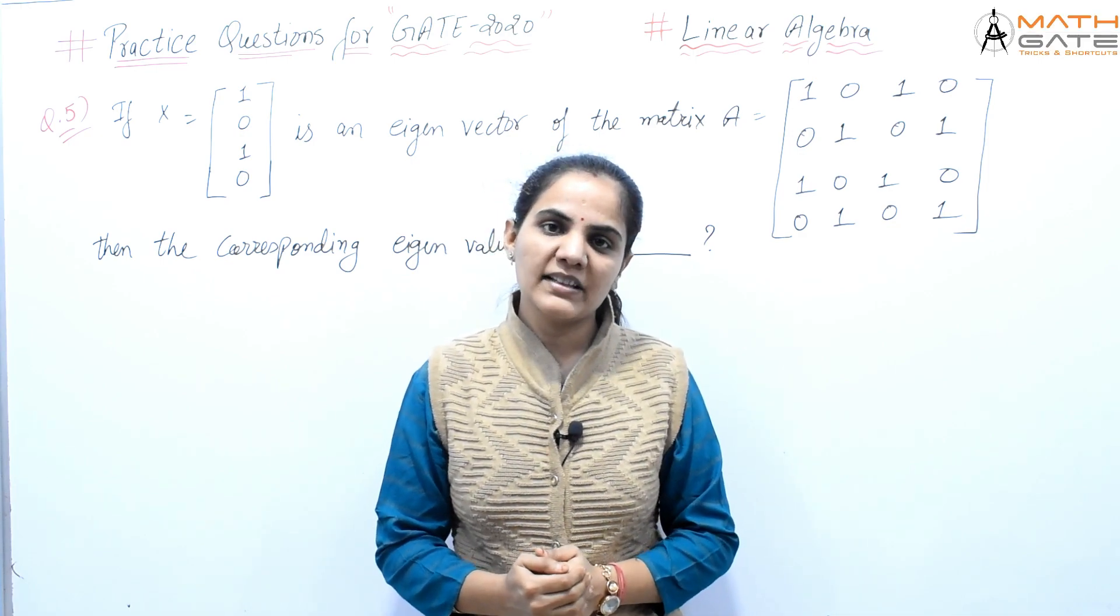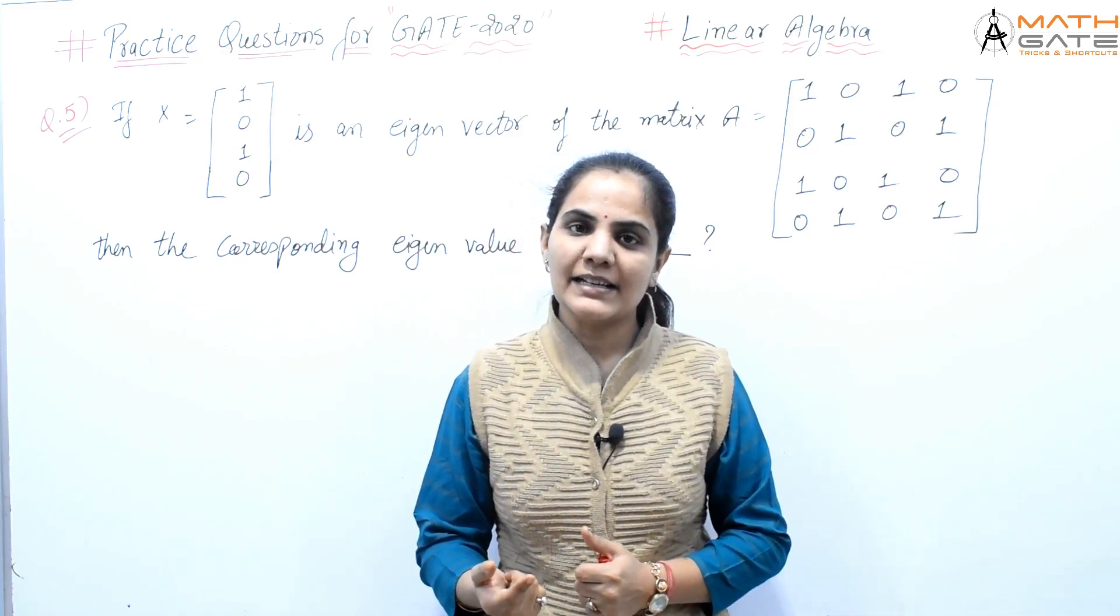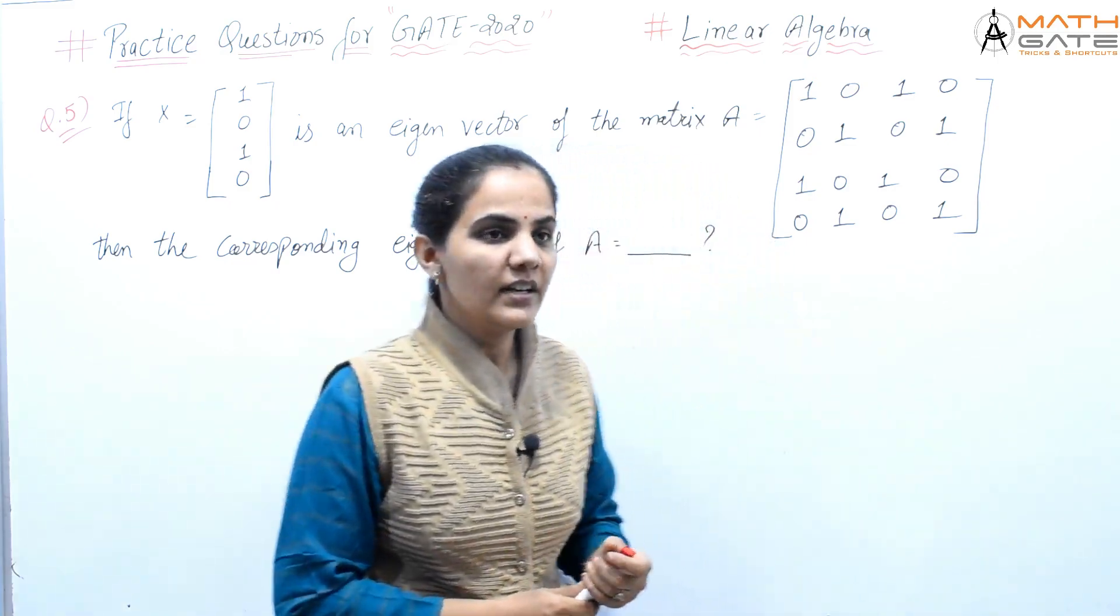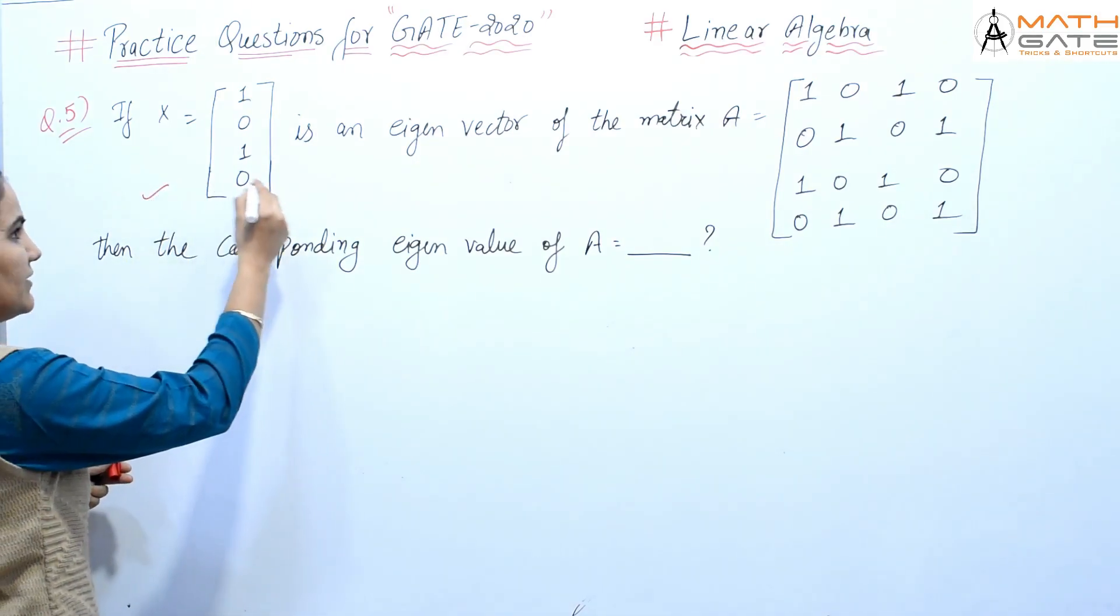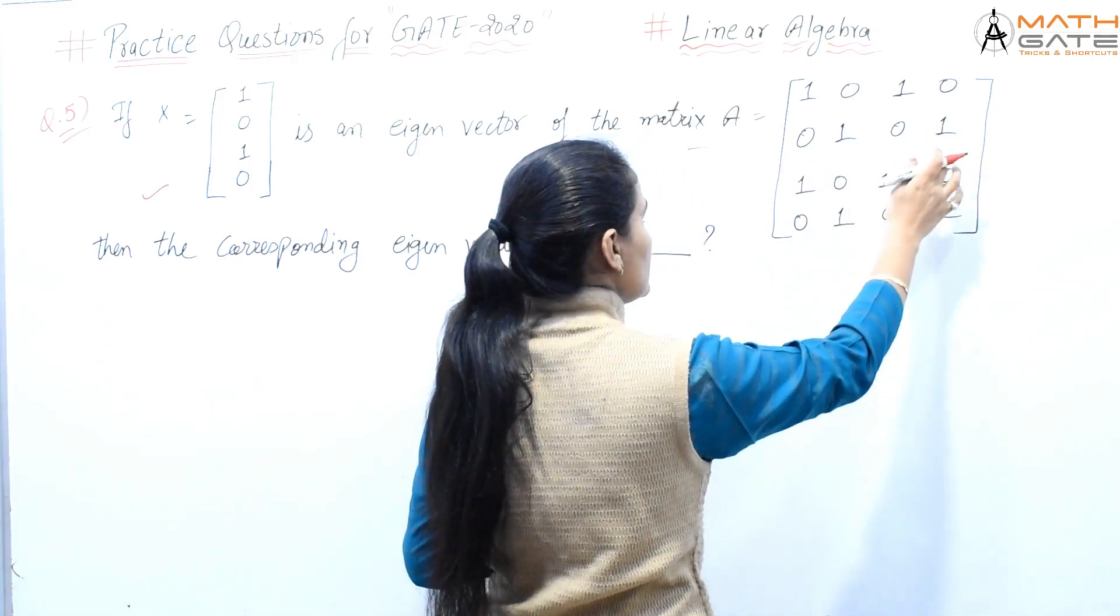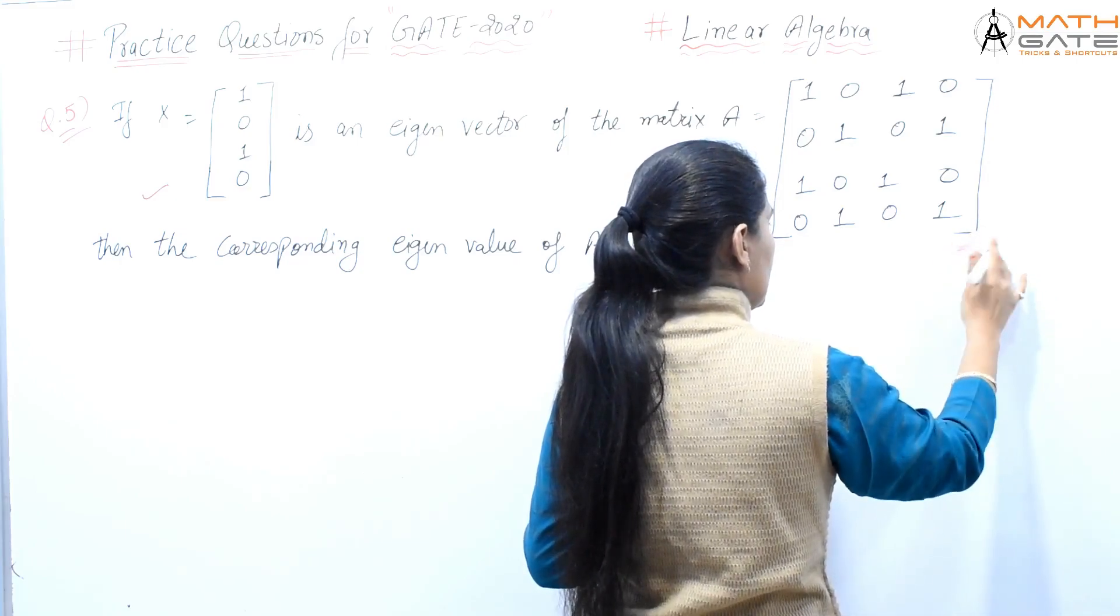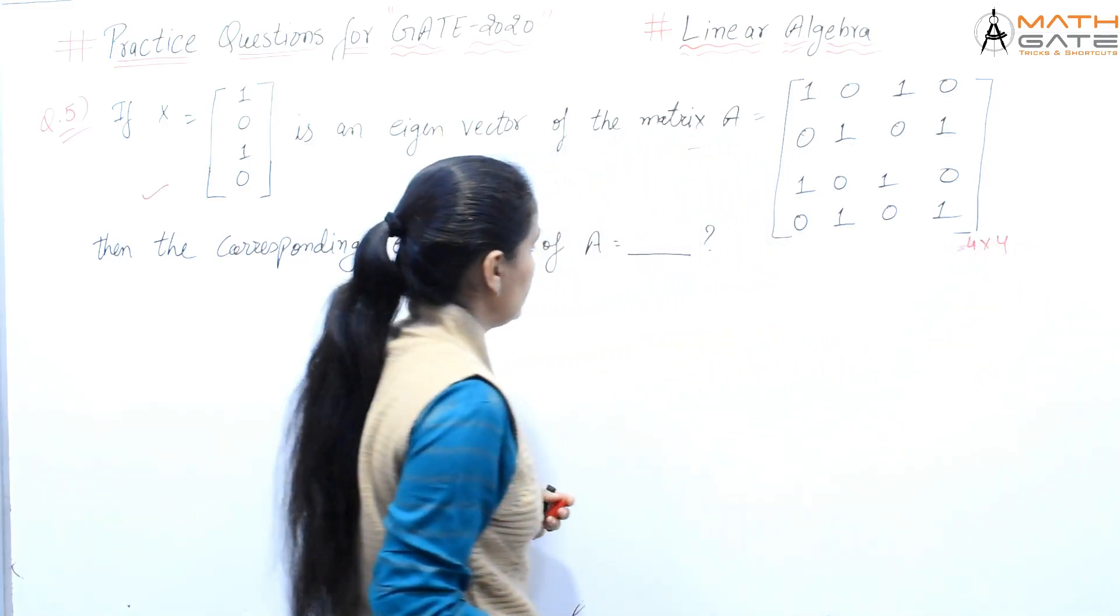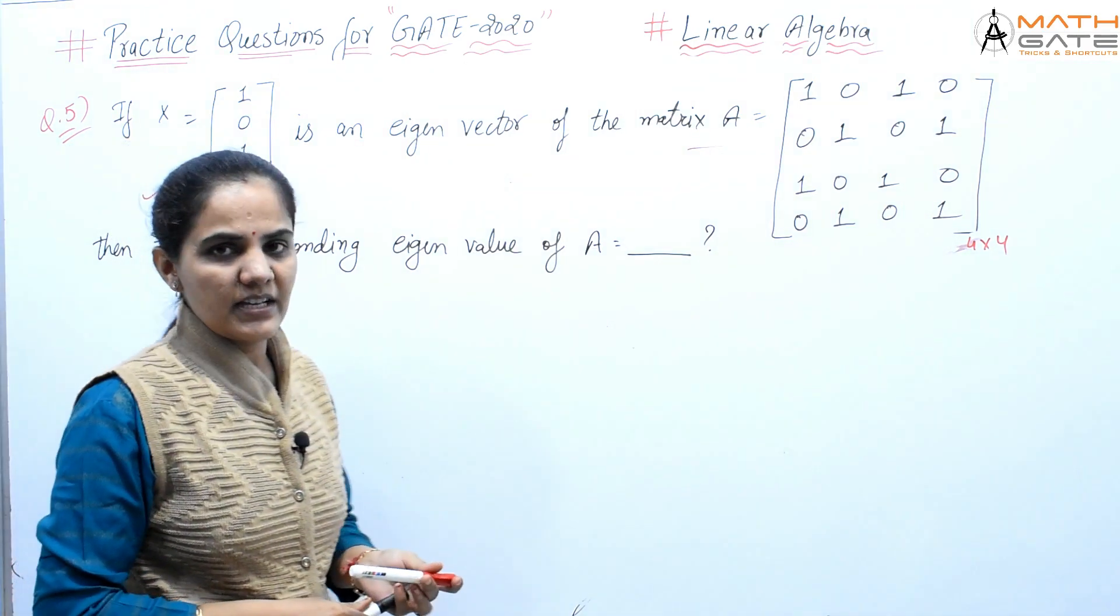Hello students, welcome to Math Guide. Let's discuss practice question number 5 for linear algebra. If x equals [1,0,1,0] is an eigenvector of the matrix A, which is a 4×4 matrix with elements [1,0,1,0; 0,1,0,1; 1,0,1,0; 0,1,0,1], then what is the corresponding eigenvalue of matrix A?